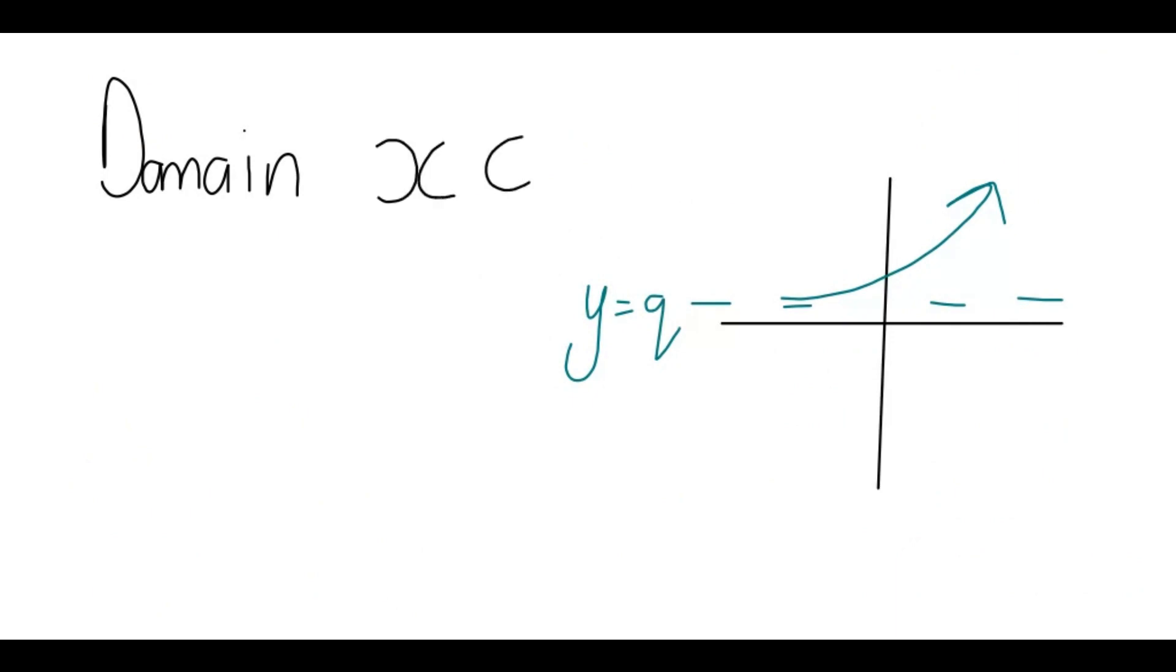And then it's all of them, right? Because it continues forever. So x will be an element of all the real numbers. But the range, so for which y-values will this function be defined? You'll see, if you go up and down on the y-axis, you'll see that this doesn't even go anywhere near the negative y-axis.